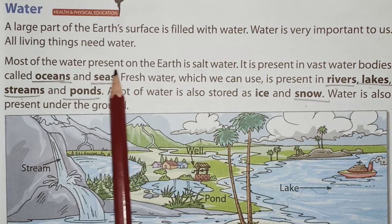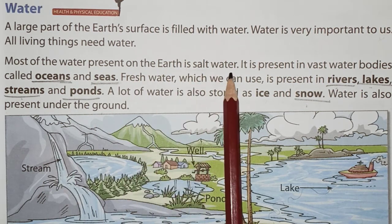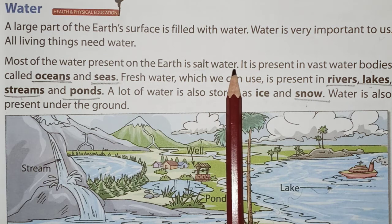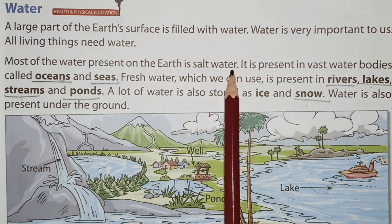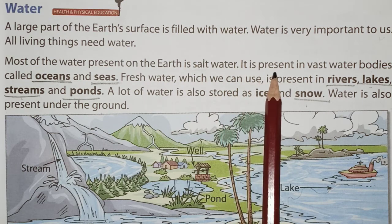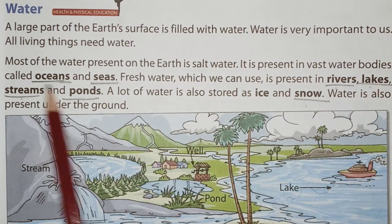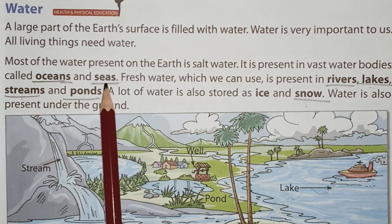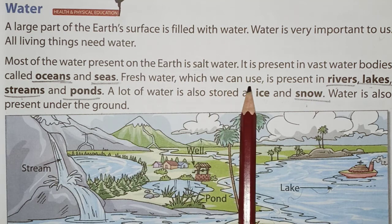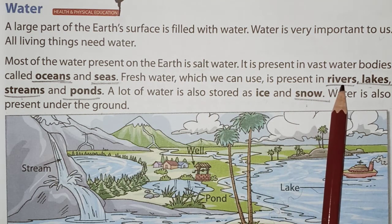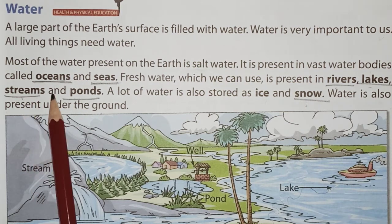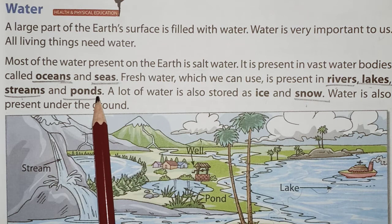Most of the water present on the Earth is salt water. We have a large amount of water on the Earth but it is present in the oceans and seas. Fresh water which we can use is present in rivers, lakes, streams and ponds. That water only we can drink — we cannot use sea or ocean water.